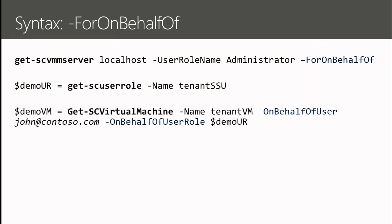When you talk to VMM on behalf of somebody, you have to tell it two things: what user role is being played by the person you're proxying for, and who they are. In this example I have john@contoso.com — this is really nothing more than a string. We've taken the AuthN/AuthZ problem and split it: we've left authentication to the portal writer, and we handle authorization of the requested action. John@contoso.com is just an identity — it could be a Facebook ID. We just store it, and in the audit job log you'll see the action was performed on behalf of that person.